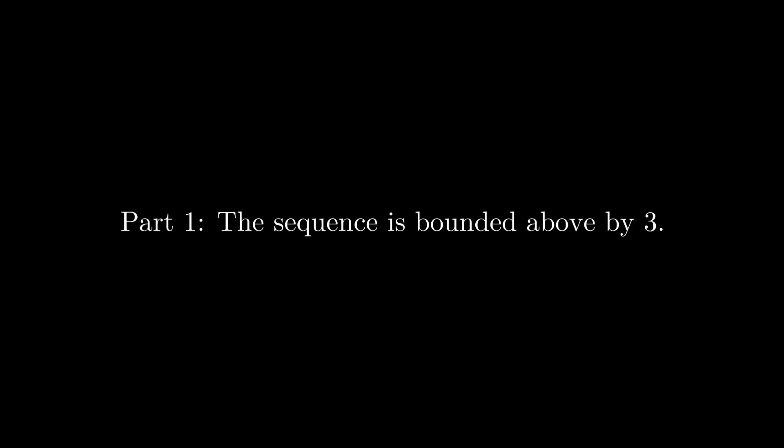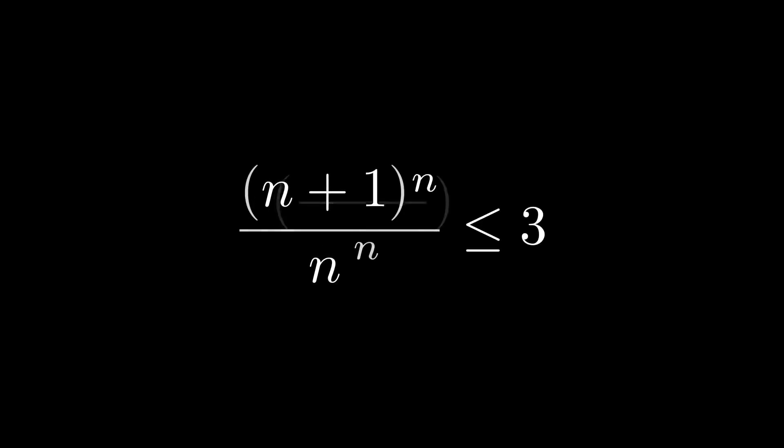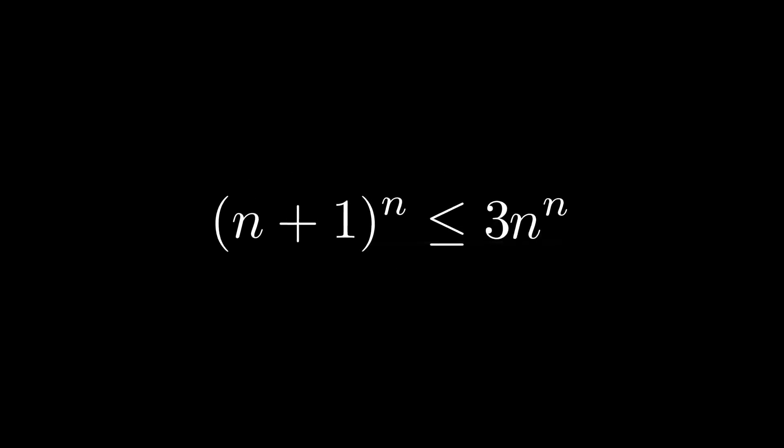Let's take a look at our first claim, that the sequence is bounded above by 3. The whole point of this video is to use counting arguments, so for this proof we want to work with integers. Let's rearrange this inequality a bit. Notice that we can make this into an integer inequality because all the terms of our sequence are rational.